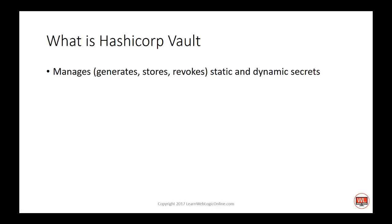Vault is meant to be very opaque to the end user. What I mean by this is Vault handles all the encryption and decryption details. End users can ask Vault to store a secret, and Vault will handle encrypting that secret and storing it securely. Vault also provides an encryption service separate from a storage service, which can be used to protect data in transit — data that is not stored in Vault.